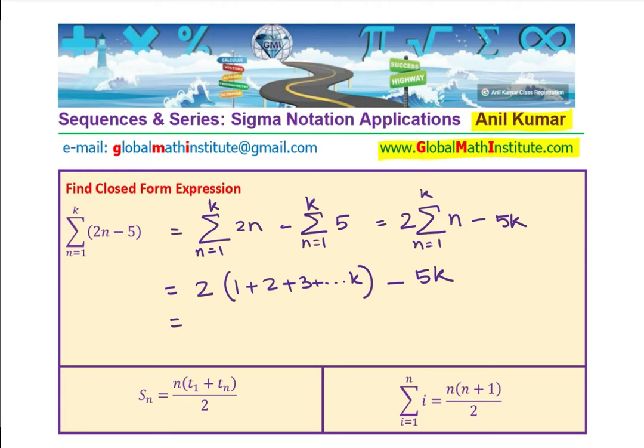So sum of natural numbers as you know is n times n plus 1 divided by 2. There are k numbers, so k times k plus 1 divided by 2, and we have minus 5k.